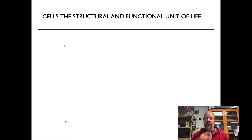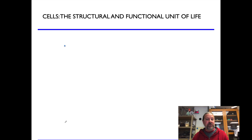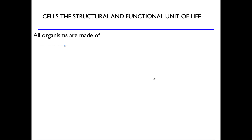Hey everybody, we made it! So we started at the most simple level of organization, which is the atomic level. We learned all about atoms. Then we learned how atoms combine to form molecules, the second level of the biological levels of organization. And once you have all the correct biomolecules together in the right order and in the right combinations, we can then reach the cellular level of organization. So the cellular level is ultimately the level in which all of those characteristics of life can take place. So let's go ahead and get started learning about cells.